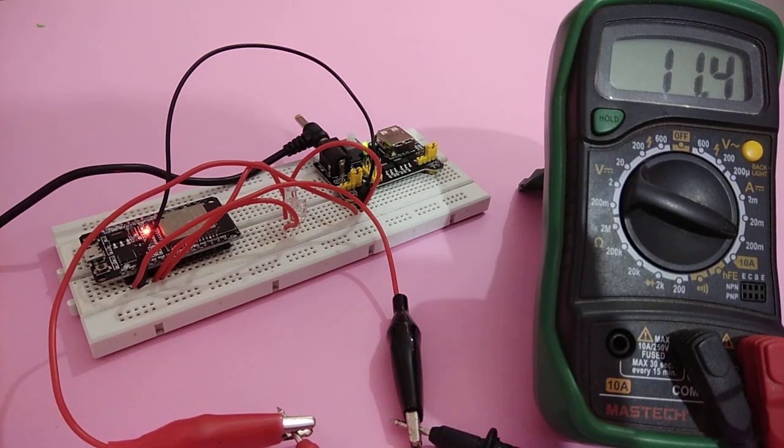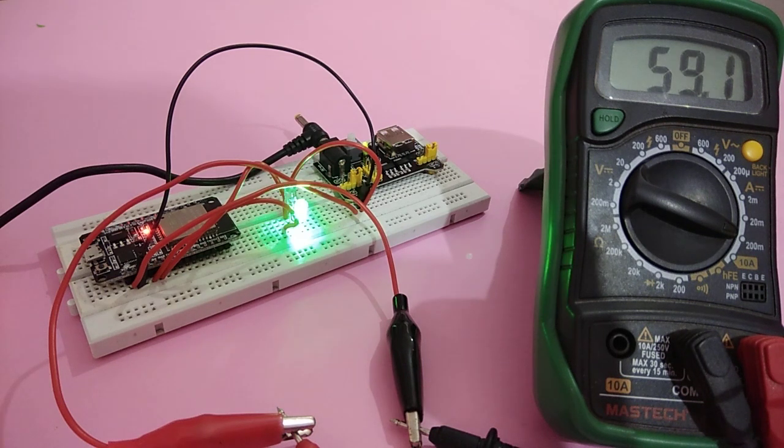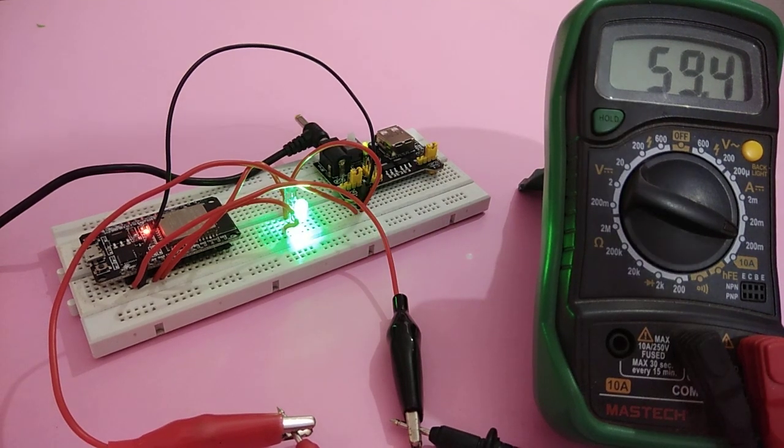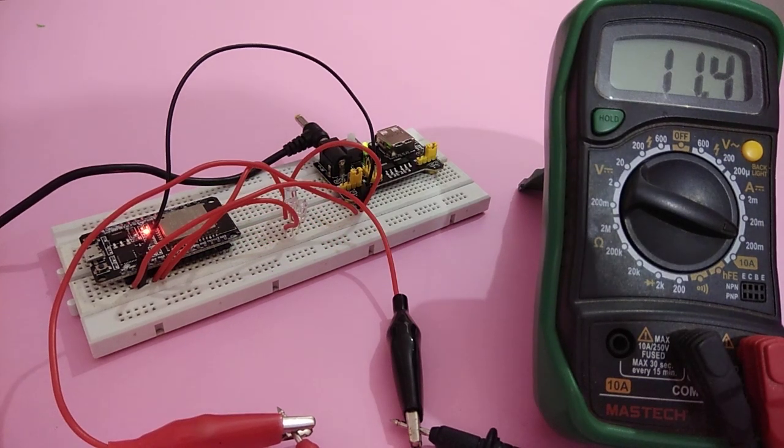When LED is off, it is near about 11 milliampere. Look, in green LED mode, that is active mode, it is 59, that means approximately 60 milliampere. In deep sleep mode, it is near about 11 milliampere. So you can see, by using deep sleep method, we can save a lot of power of ESP32 when it is connected to battery.